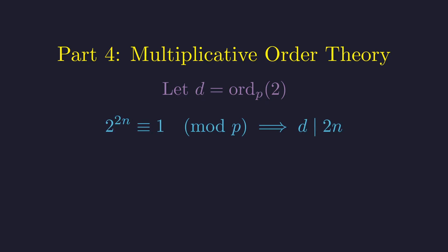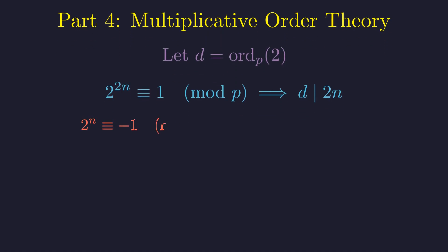From our earlier result, since 2 to the 2n is congruent to 1, the order d must divide 2n. However, since 2 to the n is congruent to negative 1, it's definitely not congruent to 1.